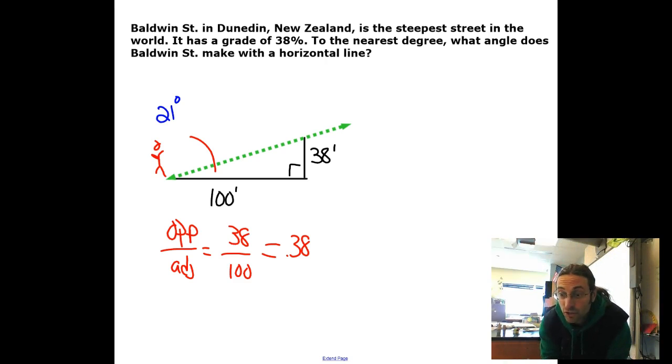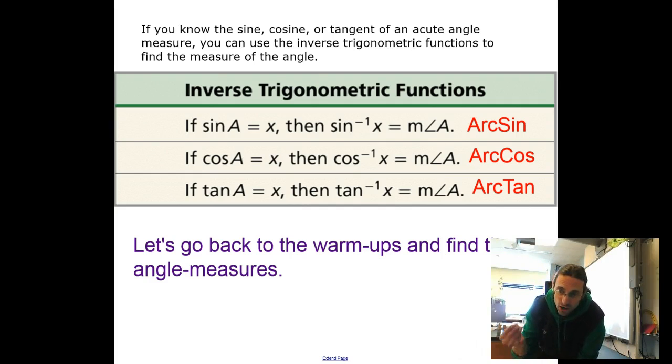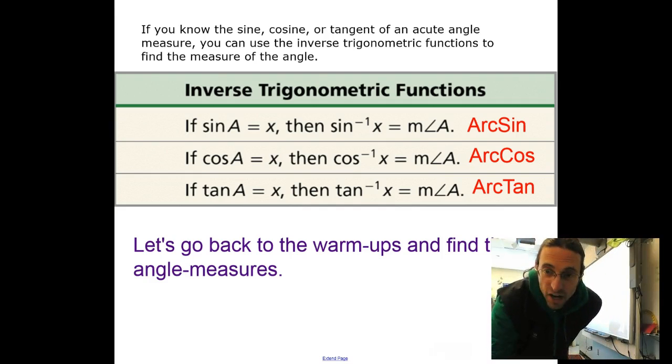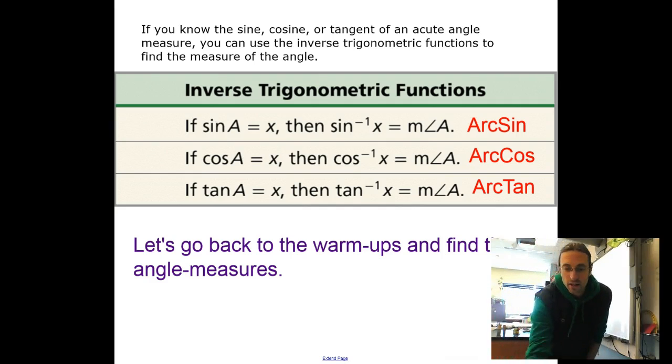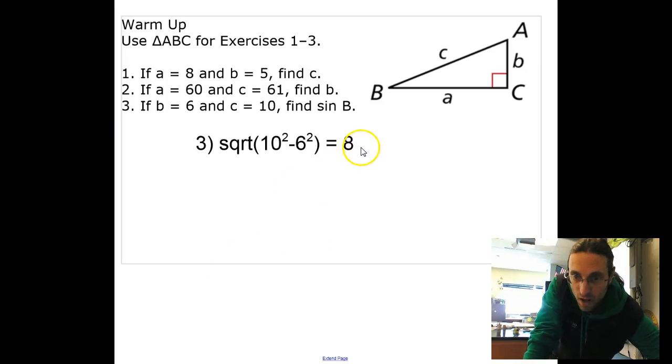This is how we're going to use these trig ratios backwards to find angle measures. Here it is in your book: if you know the sine, the cosine, or the tangent—remember the sine, cosine, and tangent is just a ratio between the sides—then you can use the inverse trigonometric function to find angle measures. If you know what the sine of a is, use the arc sine to find the measure of angle a. If you know the cosine of a, use arc cosine. If you know the tangent of a, use arc tangent. Let's go back to the warm-up and take a look at this problem.